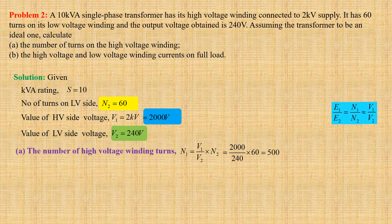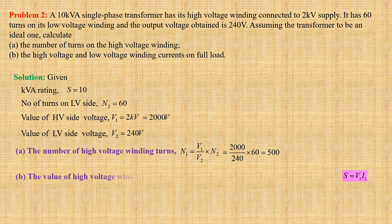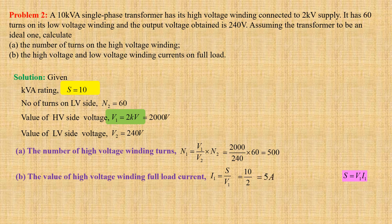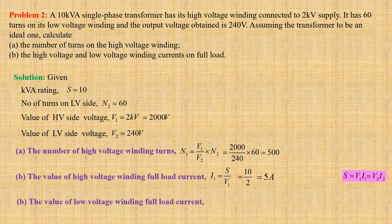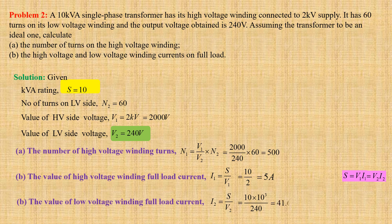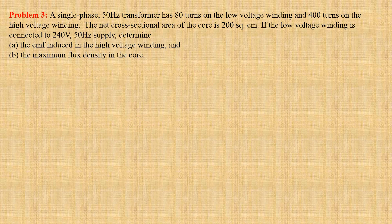For a single phase transformer, S equals V1 × I1. The high voltage winding full load current I1 equals S/V1, that is 10 × 10³ divided by 2000, which gives us 5 ampere. For a single phase transformer S equals V2 × I2. The low voltage winding full load current I2 equals S/V2, that is 10 × 10³ divided by 240, which gives us 41.67 ampere.